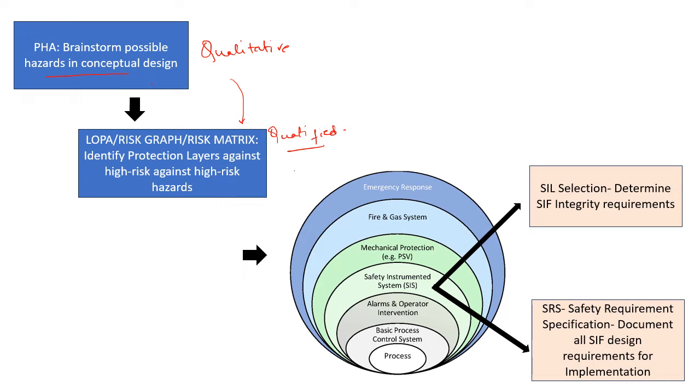This is what is generated out of LOPA, this onion ring. So you have your process, your basic process control system, your alarm, and then you have emergency, fire, mechanical protection, everything is there. In between what is left is your safety instrumented system. During the LOPA all these layers are identified, and how much risk reduction is possible by each of this layer is also being calculated.